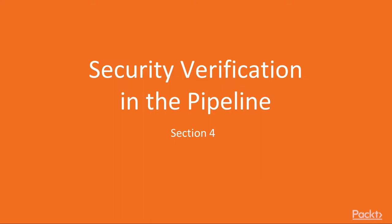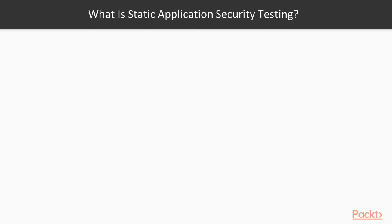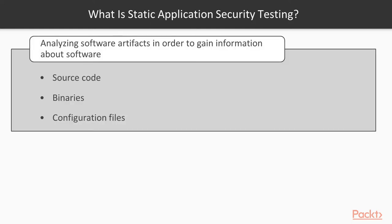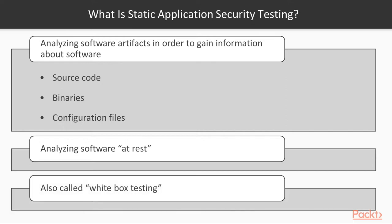In this section, you will see how to use a combination of static and dynamic application security tools for verification of a web application. Static application security testing, also known as SAST, analyzes software artifacts to uncover vulnerabilities during the coding and unit testing phases. These tools scan primarily the source code and may also look into binaries and configuration files. These tests can be done without running the application — no separate operational setup is required. Since SAST requires access to source code, it is also known as white box testing.